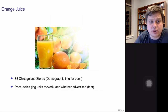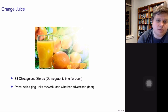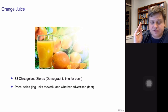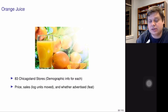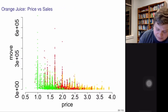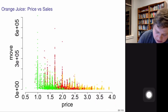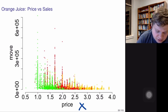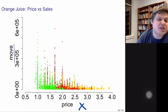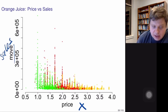Let's look at an example: orange juice sales and marketing campaigns. Similar to a previous example, we'll try to understand the relationship between price, sales, and features of the marketing campaign, but this dataset will require modeling some interactions. We have price as one x variable and 'move' — the number of units moved, essentially sales — as the y variable.